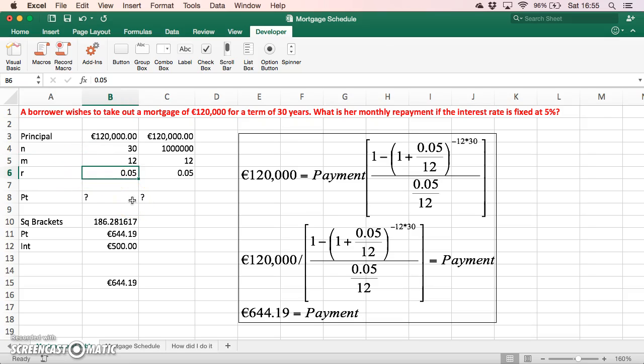If we isolate the square brackets on its own, we could write it as follows: 1 minus (1 + the rate of interest divided by m) to the power of negative 12 times 30, divided by 5% over 12 again. Just by itself, that's the square brackets.